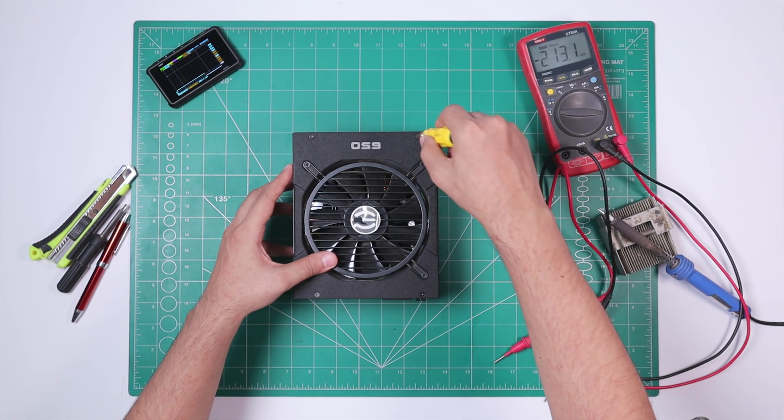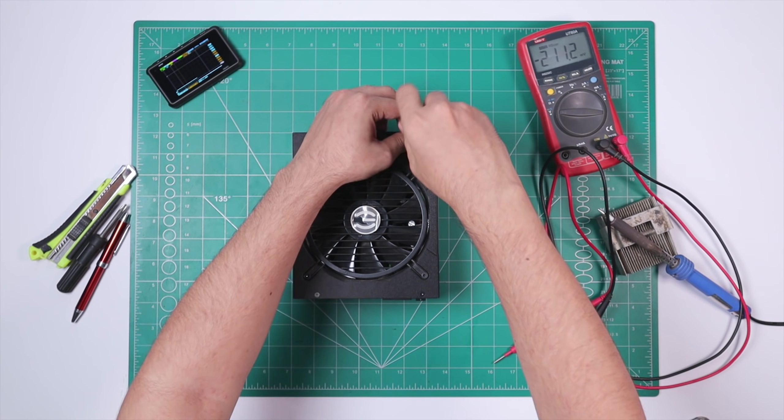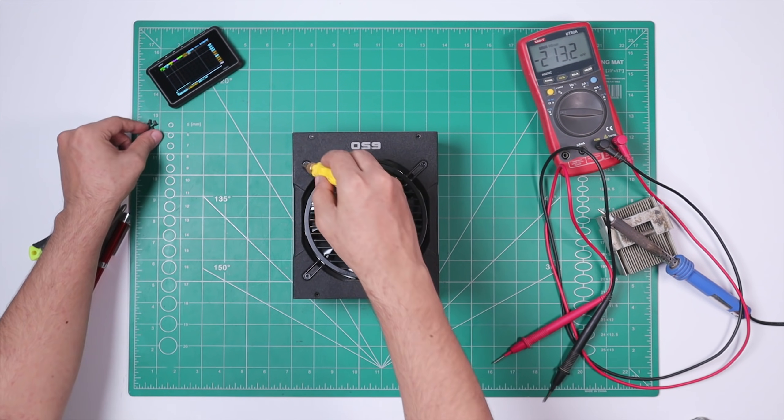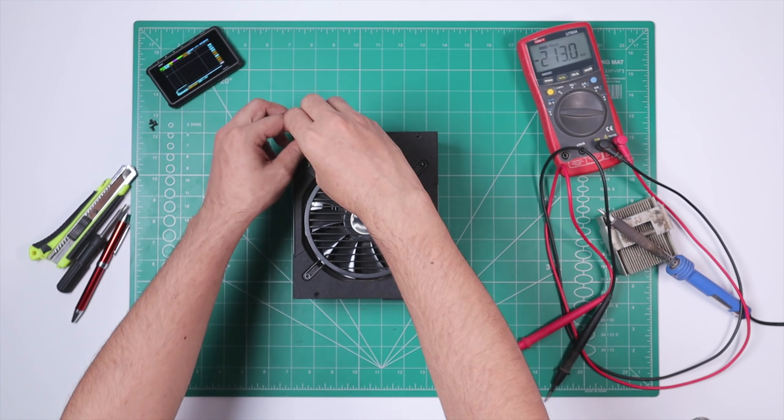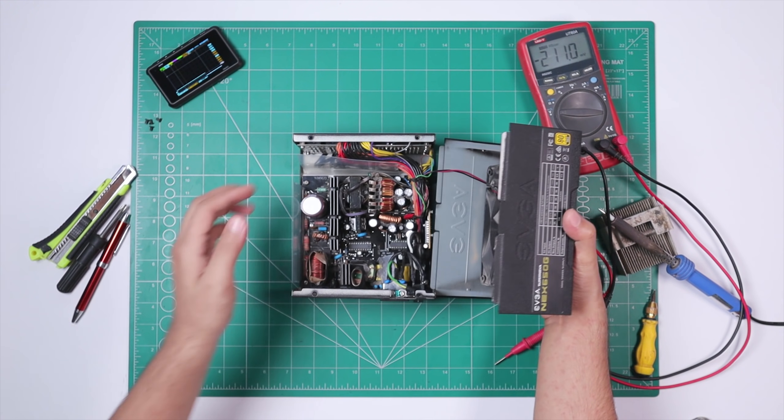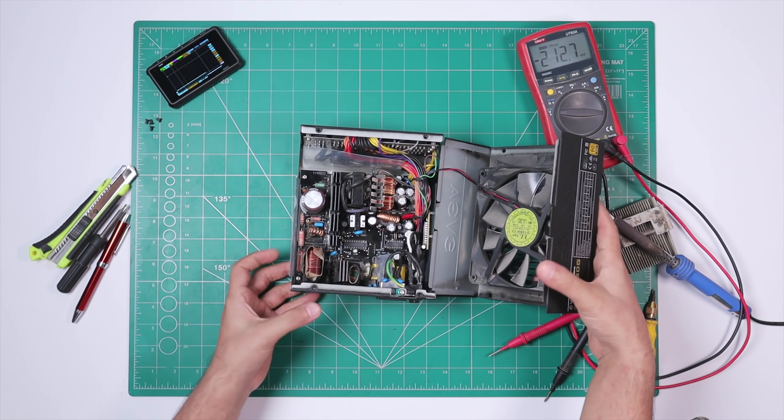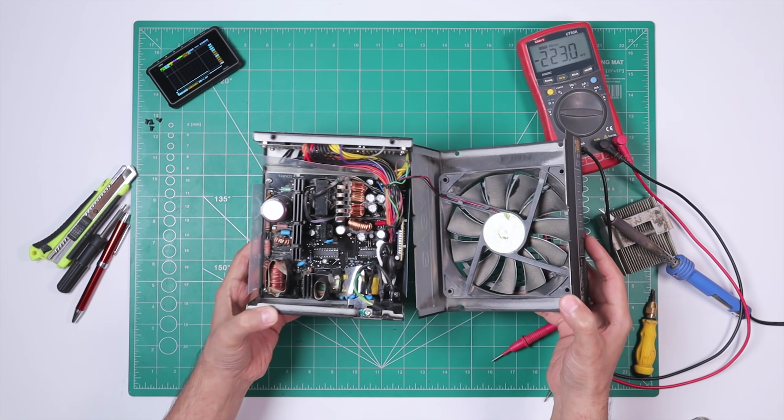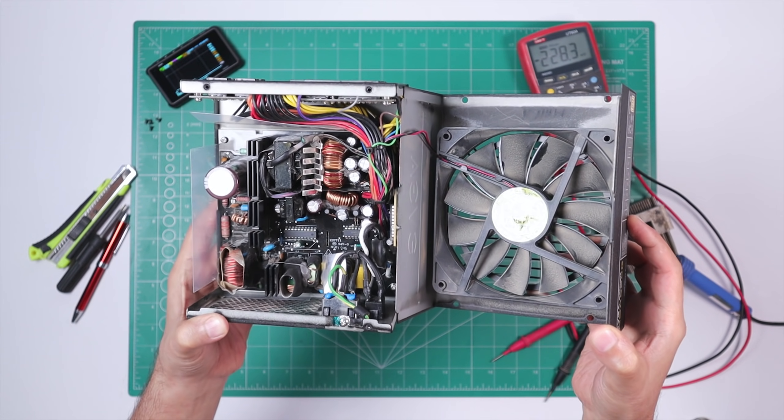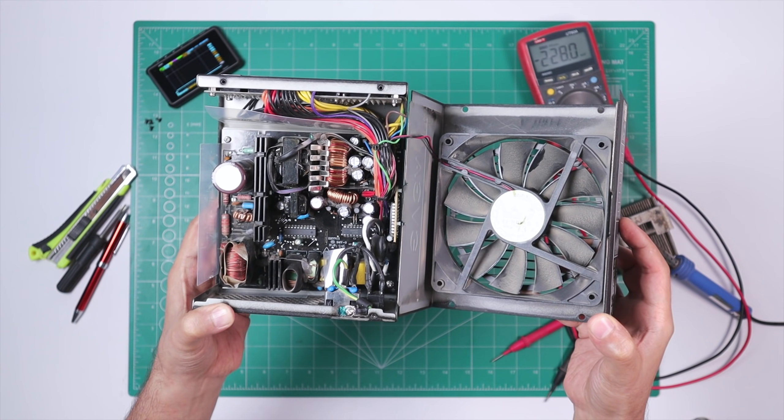So now I'm gonna open up the power supply and I'm gonna see if there is any short or component failure on the secondary side. But before opening up this PSU, let me first warn you guys: every PSU has got a bulk capacitor inside that remains charged for up to 200 volts or more even when you disconnect the power. So this can be quite lethal and dangerous, so make sure you disconnect the power for at least an hour before opening it up.